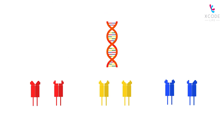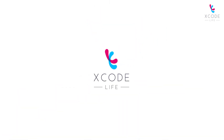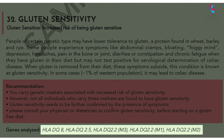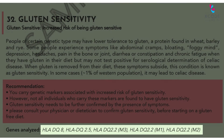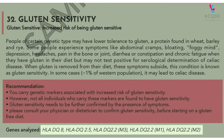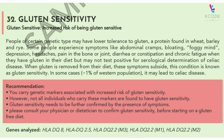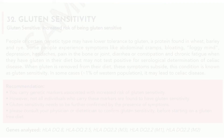Genetic tests are used to determine which type of HLA-DQ variant you carry. Xcode Life's Gene Nutrition Report analyzes five subtypes of the HLA-DQ gene for gluten sensitivity. You can use that information for tailoring a personalized diet to suit your nutritional needs.